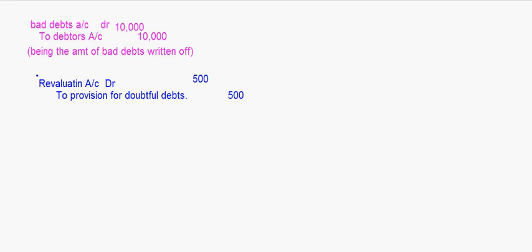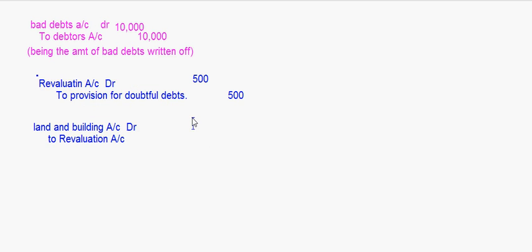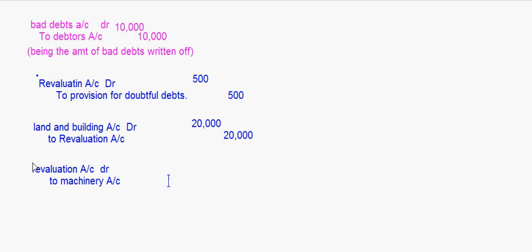Land and buildings are to be appreciated by 10%. The asset is increasing, so: Land and Buildings Account debit to Revaluation Account. The amount is 10% of 2,00,000 which comes to 20,000 rupees. Then, machinery is to be depreciated by 5%, so: Revaluation Account debit to Machinery Account — that is 5% of 1,60,000 which comes to 8,000 rupees.